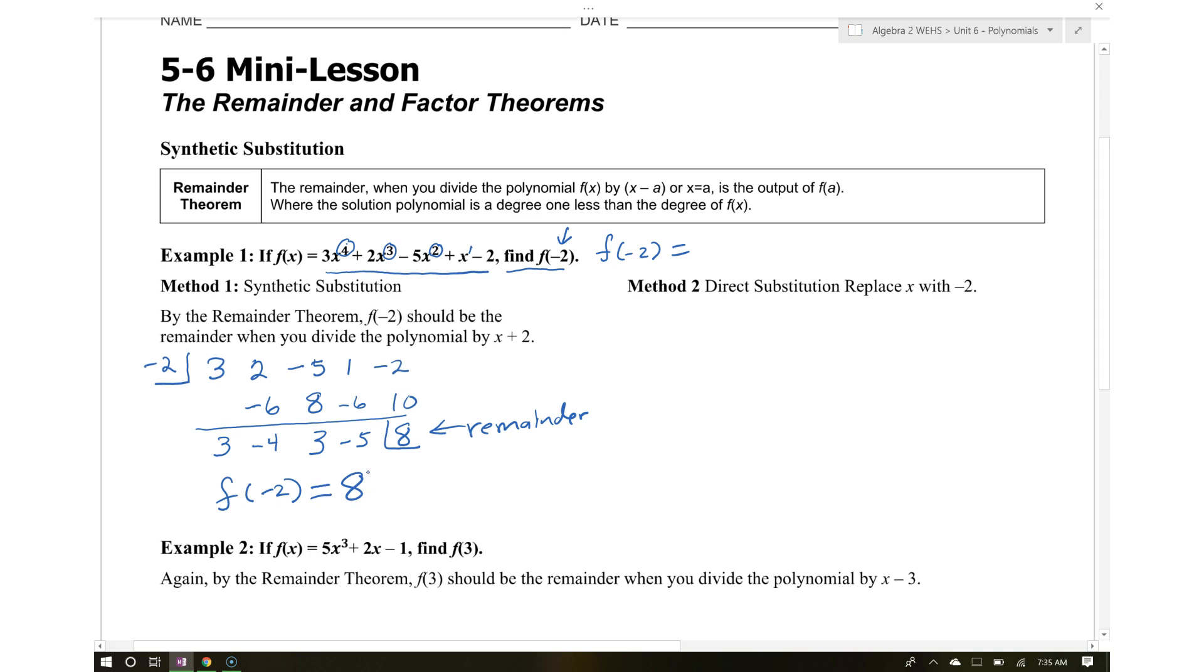To check it, the direct method is simply substituting. We have 3 times negative 2 to the 4th plus 2 times negative 2 to the 3rd minus 5 times negative 2 squared plus negative 2 minus 2. Make sure you use parentheses. You'll get 8.